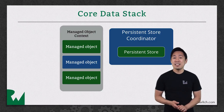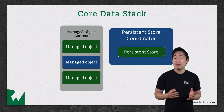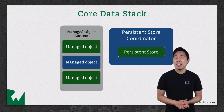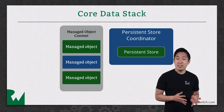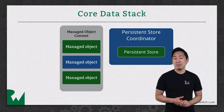In the intermediate series you'll learn some slightly more advanced techniques around the Core Data stack. You'll look at passing around more than just the managed object context, and also why you might want more than one managed object context.